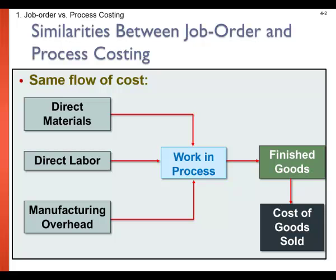Both systems have the same basic purpose: to assign material, labor, and manufacturing overhead costs to products and to provide a mechanism for computing a unit cost. Both job order and process costing have the same basic flow of material accounts. We apply direct materials, direct labor, and manufacturing overhead into our work in process accounts. We then transfer work in process to finished goods, and when we sell those finished goods we apply the cost to an expense account called cost of goods sold.